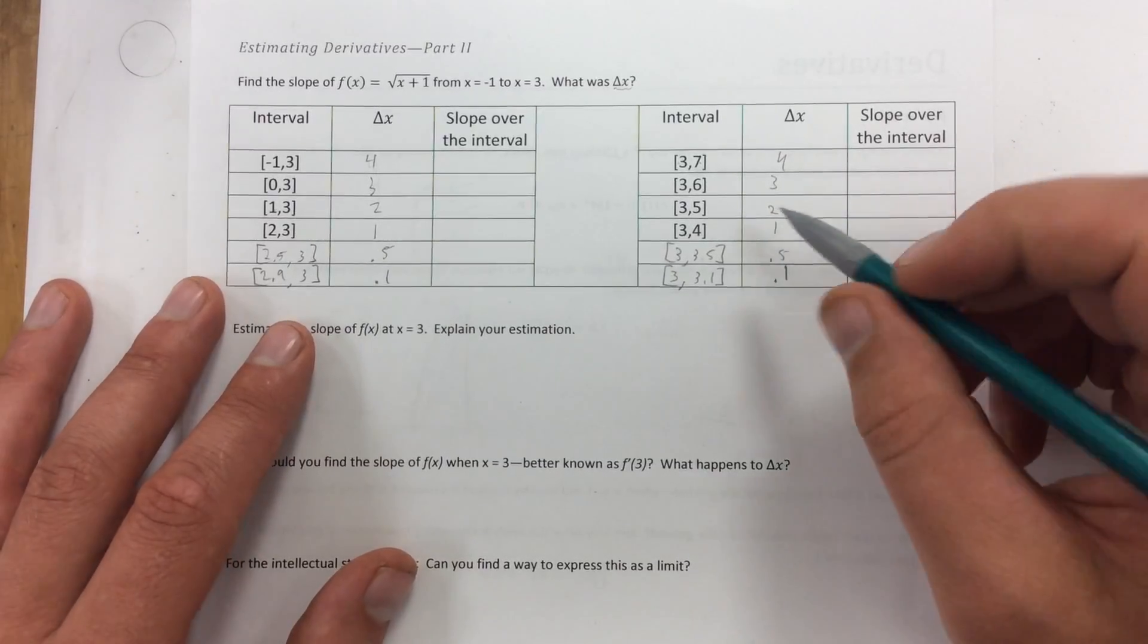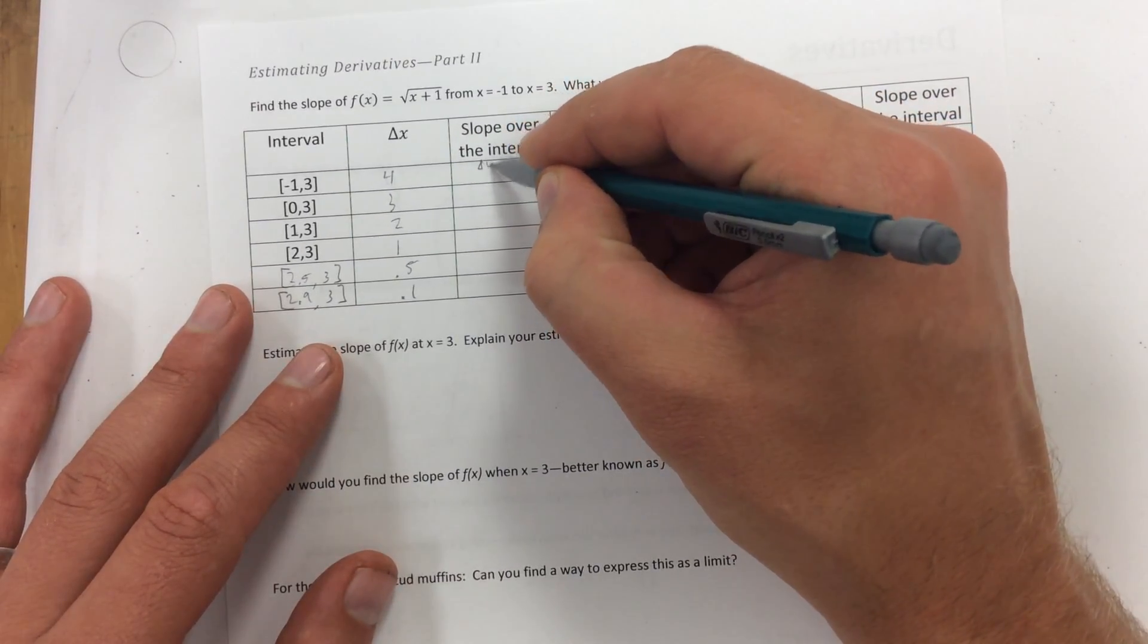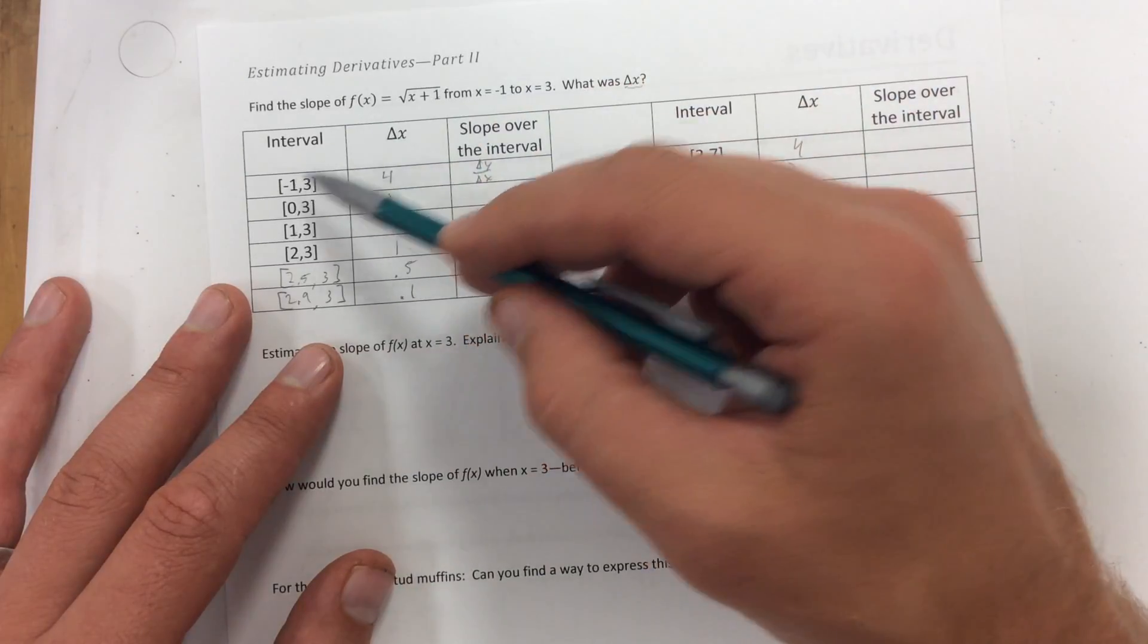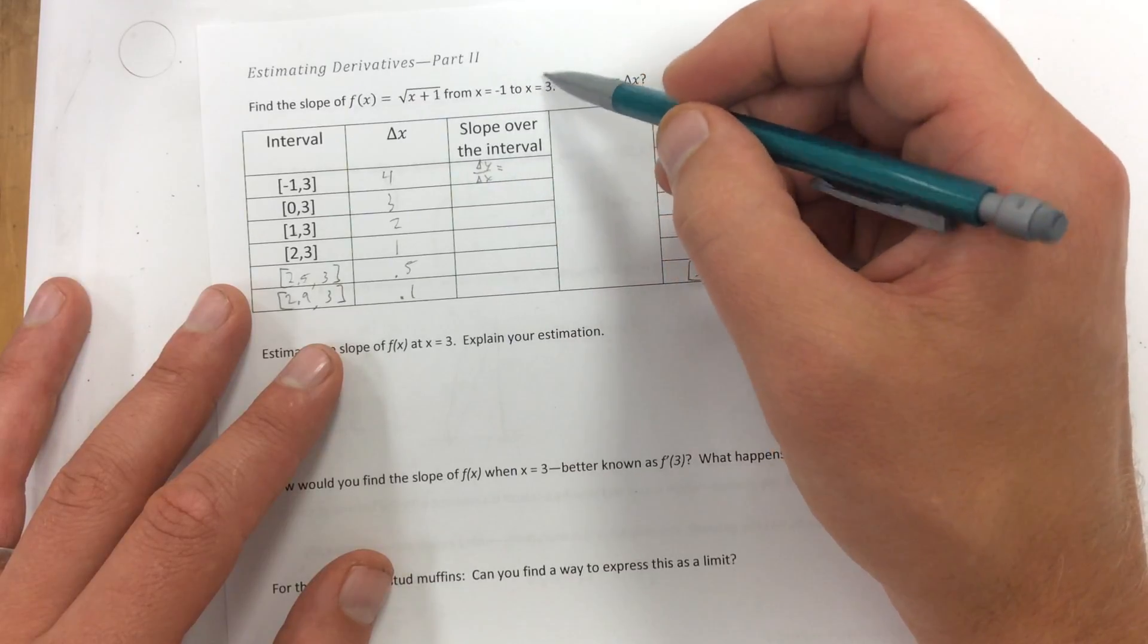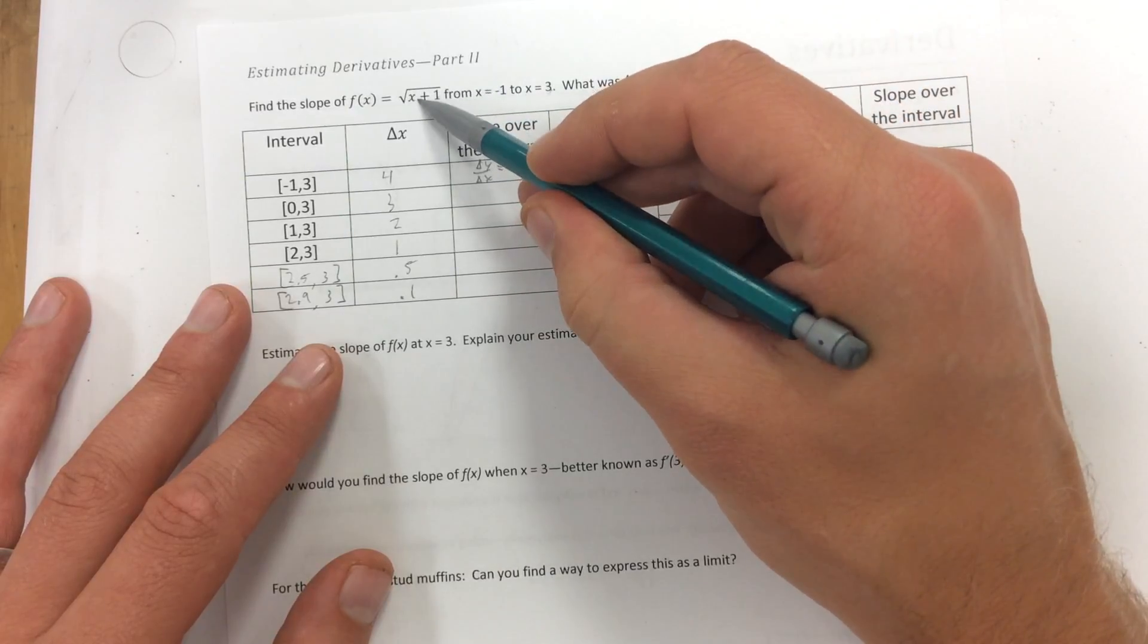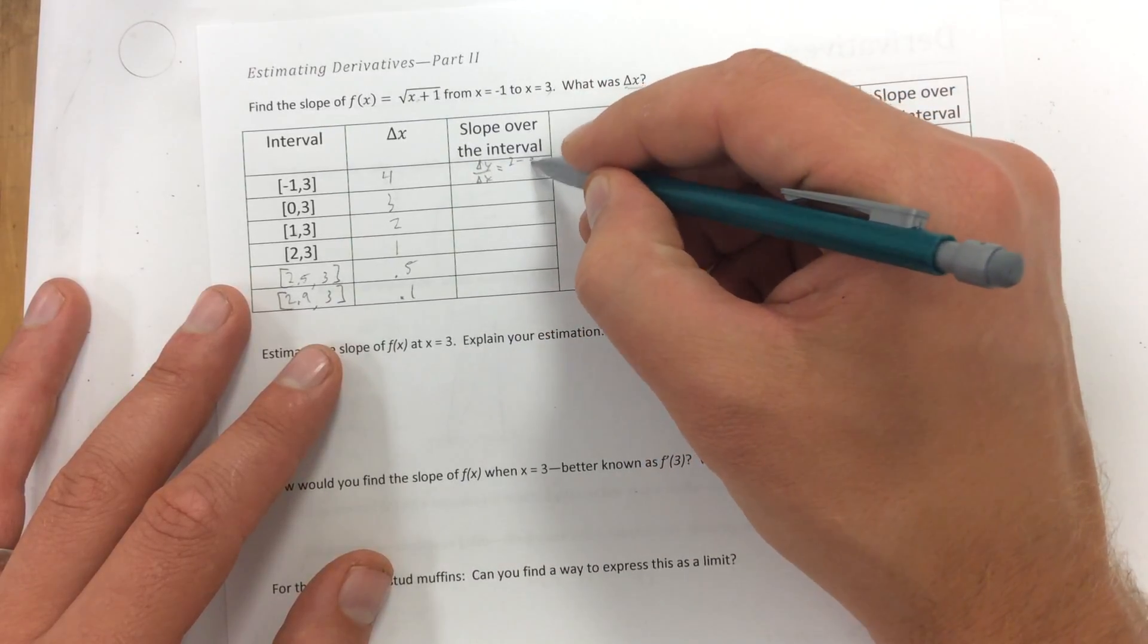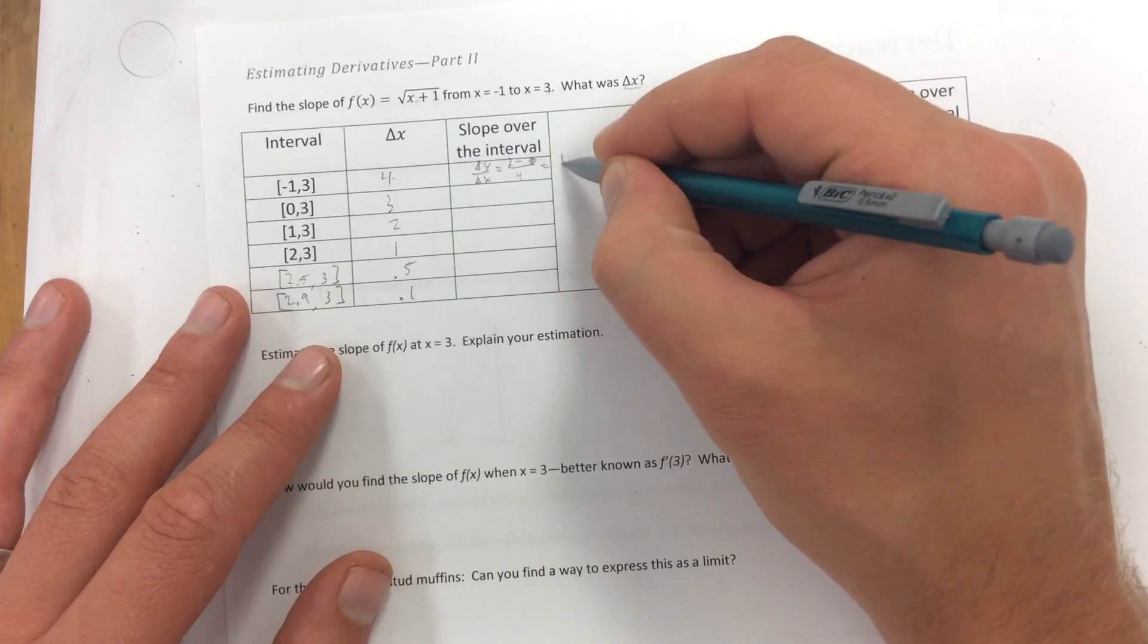So to find the slope over this interval, we're going to take the change in y values over the change in x values. All right. So, this one, the first one's pretty easy here. If I find the change in y values, just y2 minus y1 over x2 minus x1, we're going to get, if I plug in 3 for the first one, we're going to get the square root of 4, which is 2. Plug in negative 1 for that. We're going to get 0. So 2 over the change in x is 4. So we're going to get 1 half.